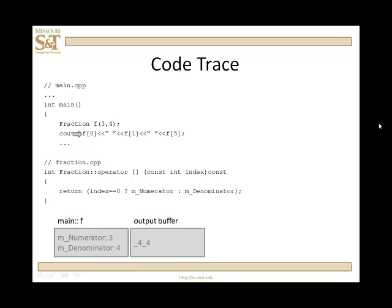And then f is 0. So we're passing 0 in as the index. So index is 0. That means we're going to return the numerator. And so we'll return and output the numerator, which is 3.